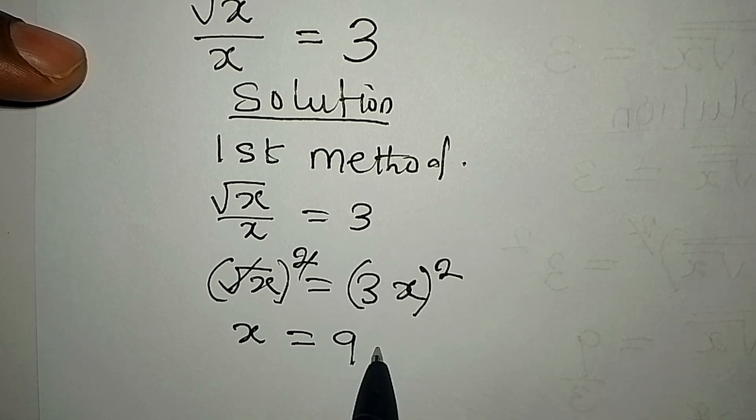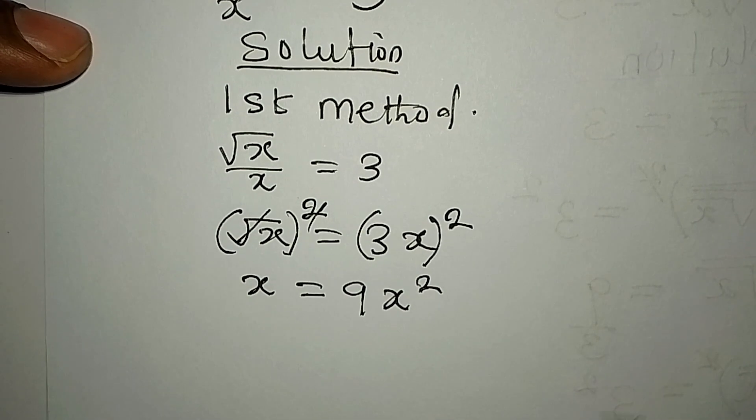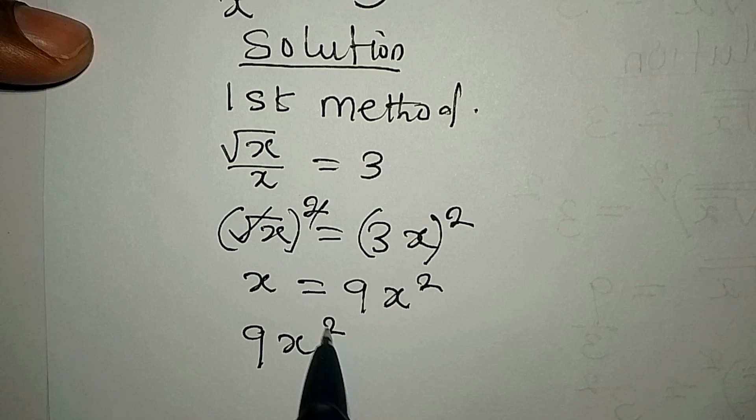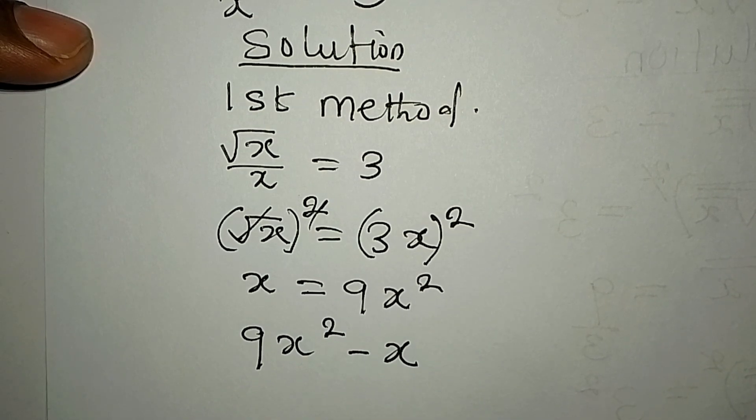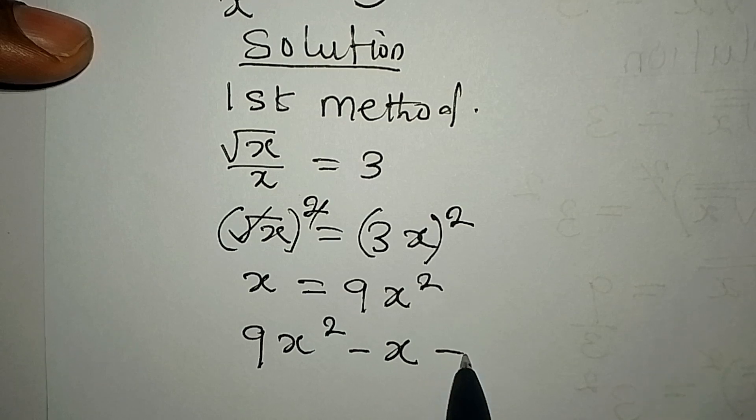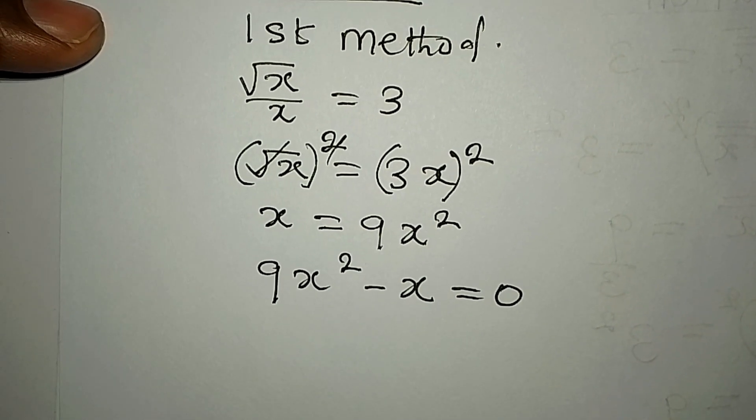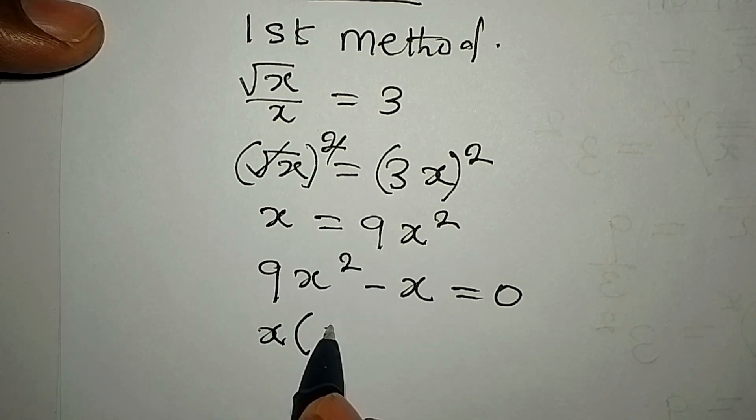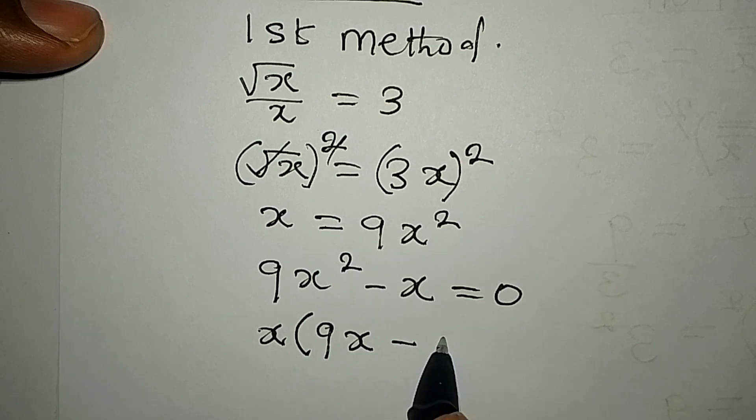We write 9x squared, then this becomes minus x since it's going to meet with the other, and then everything is now equal to zero. What is common to both of them is x, so I write x, then 9x minus 1, and we equate this to zero.